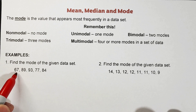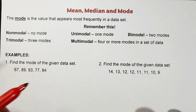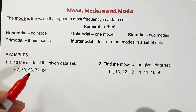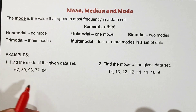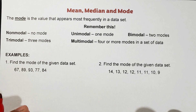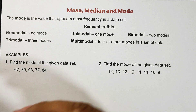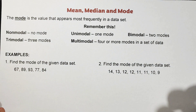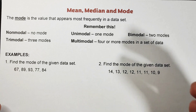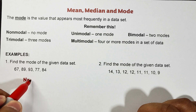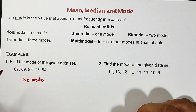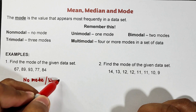Let's have examples to better understand finding the mode. We have: 67, 89, 93, 77, 84. Observe the numbers — all of them appear only once in the dataset. Since they all appear equally (once each), no single number appears more frequently than the others. The conclusion is: no mode. This is a non-modal dataset.